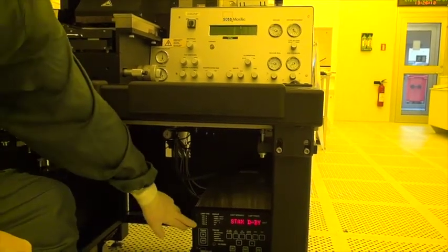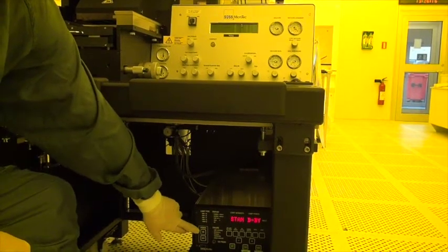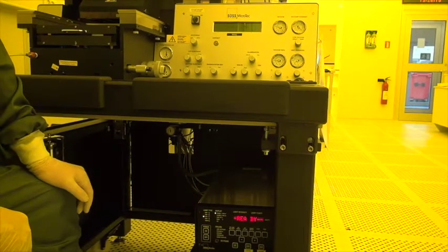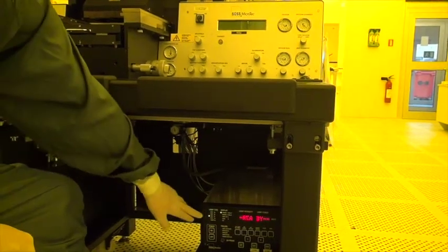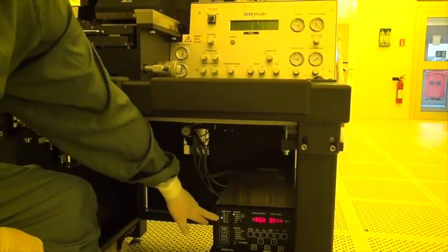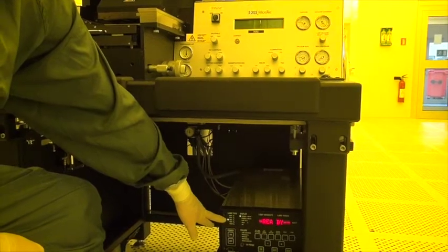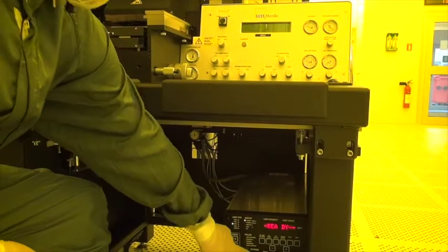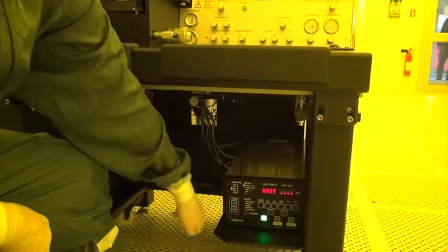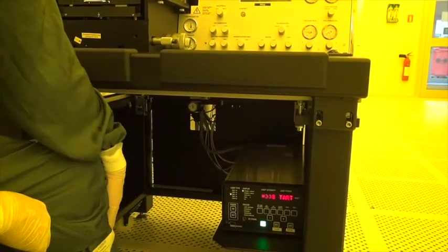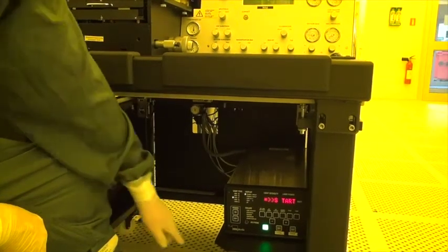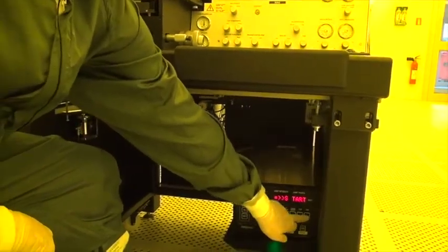Then on the power supply for the lamp we press on. We verify that the lamp is correct, 500 watt xenon. When it says ready we can press CP for constant power. And upon indicating start we can ignite the lamp by pressing start.